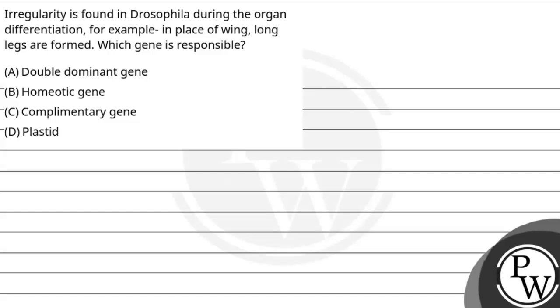Hello, let's read the question. The question says irregularity is found in Drosophila during organ differentiation, for example, in place of wing, long legs are formed. Which gene is responsible? Double dominant gene,